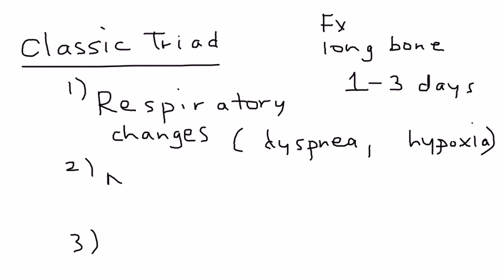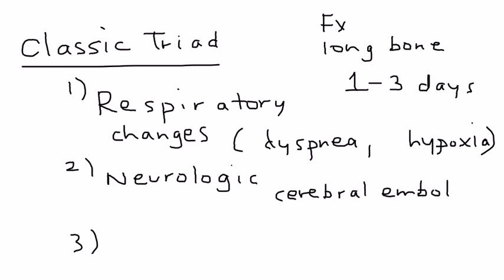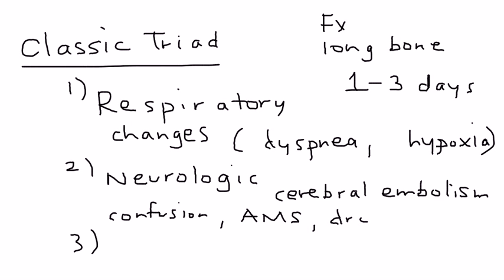The next part of the triad is neurologic changes. These happen directly because of the fat globules going to the brain — basically a cerebral embolism. Examples of neurologic changes include confusion, altered mental status, and drowsiness. If very serious, it can also lead to seizures.